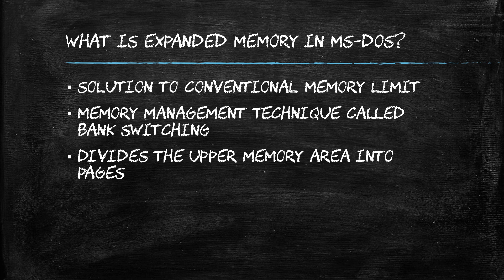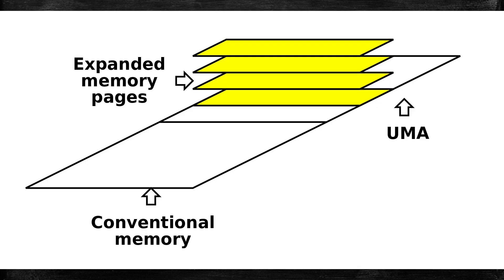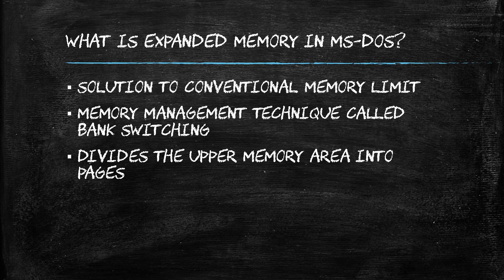Expanded memory is a memory management technique called bank switching that allows DOS programs to access more memory than the 640 KB limit. It works by dividing the upper memory area into pages. Pages of expanded memory can then be swapped in and out of the page frame as needed, enabling DOS programs to access more memory and enhancing their overall performance.